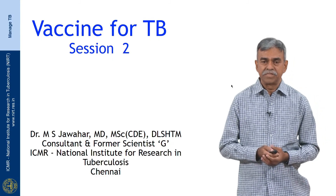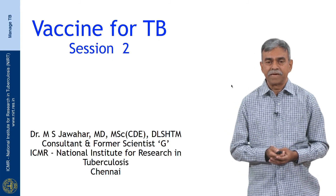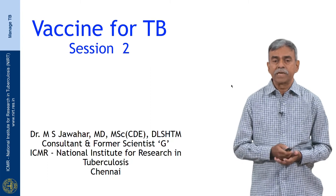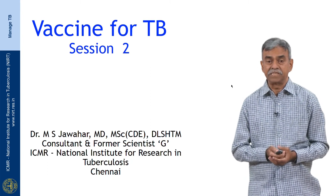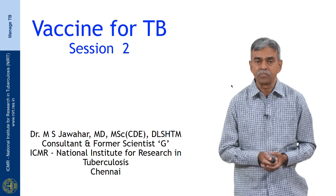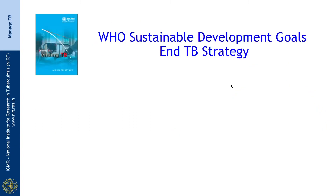In this session on tuberculosis vaccines we are going to look at what the new developments are as far as vaccines for TB are concerned. In the global efforts to control tuberculosis, the WHO has enunciated certain strategies. We had the DOT strategy in the 1990s, followed by the Stop TB strategy, and currently we have the End TB strategy as part of the WHO sustainable development goals.